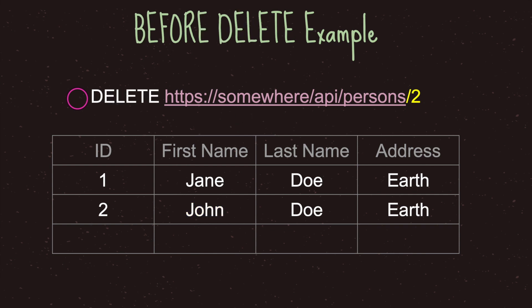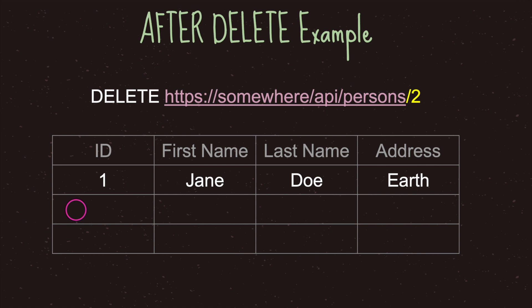To summarize: the POST method creates a resource but expects the server to create the identification number. The PUT method can create a resource if it does not exist and updates a resource, but must be provided all expected information. The PATCH method only requires the specific information you wish to change, but cannot create a new resource. And lastly, the DELETE method — you need to specify the specific resource you want to delete. In this case, persons with identification number 2. Once we pass this method to the API server, that row gets deleted.